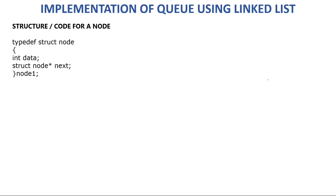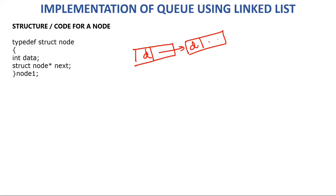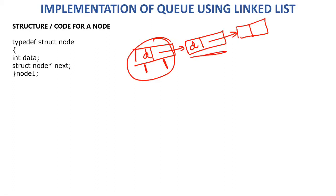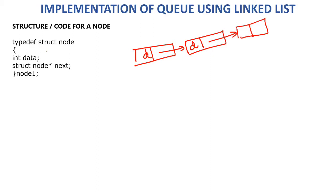In linked lists, we create a node. A node contains two parts: one is data and one is the address of another node — that is, the address of the next node. So this node has two parts: data, which can be integer, character, float, or string, and address, which is the address of the next node. I created a structure with the name 'node'. You can use any name you want.